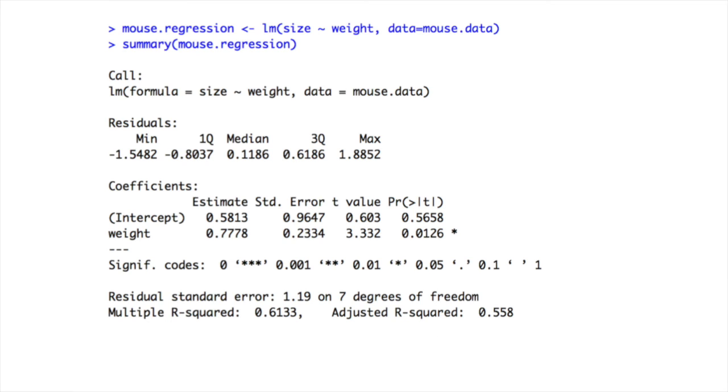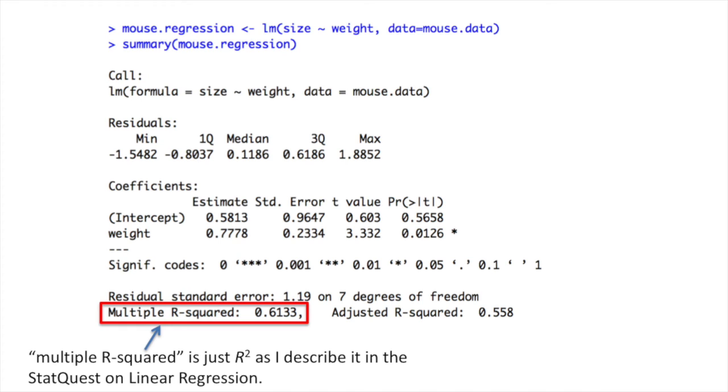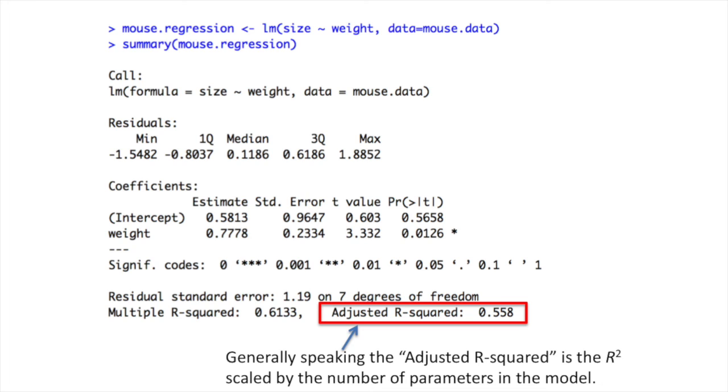The next line tells us the multiple R-squared and adjusted R-squared values. Multiple R-squared is just R-squared as I describe it in the StatQuest on Linear Regression. It means that weight can explain 61% of the variation in size. This is good. Generally speaking, the adjusted R-squared is the R-squared scaled by the number of parameters in the model.